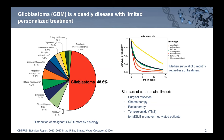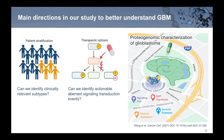Heading into our study, here are the two main questions we are trying to answer to better understand this disease. First, how can we identify clinically relevant patient stratifications? And second, with the introduction of proteomics and phosphoproteomics, integrated with genomic data, can we identify additional therapeutic options? Specifically, because we have protein and post-translational modification data, we want to know if we can identify aberrant signaling transduction events. This work was just published a few weeks ago in Cancer Cell and is open access — feel free to check it out.